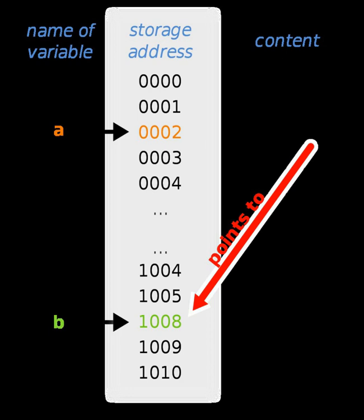One major problem with pointers is that as long as they can be directly manipulated as a number, they can be made to point to unused addresses or to data which is being used for other purposes. Many languages, including most functional programming languages and recent imperative languages like Java, replace pointers with a more opaque type of reference, typically referred to as simply a reference, which can only be used to refer to objects and not manipulated as numbers, preventing this type of error.